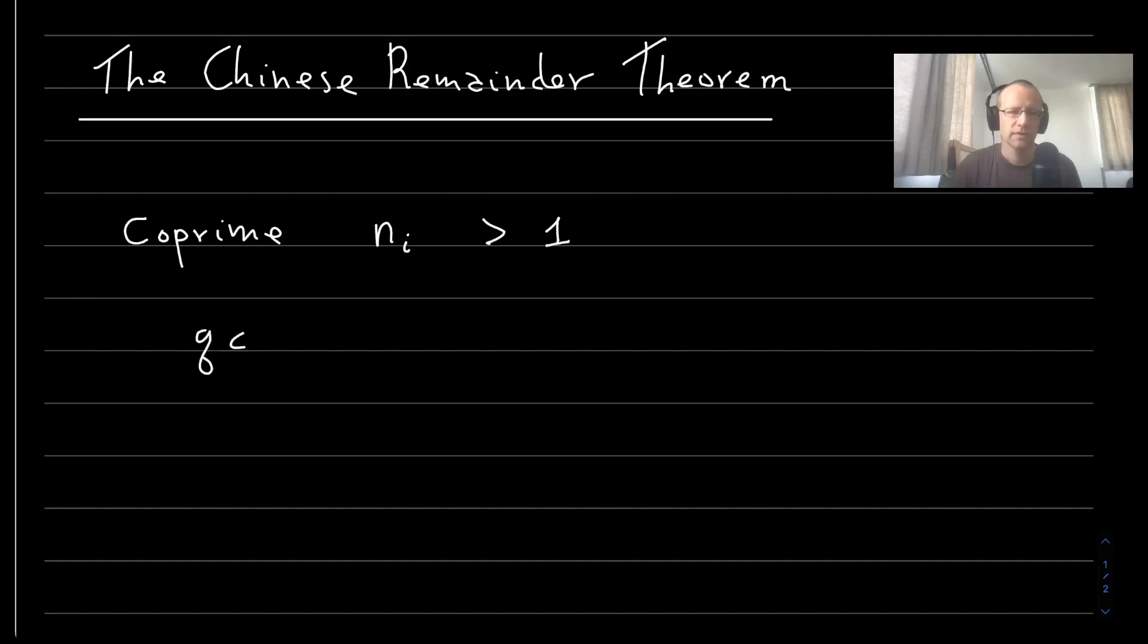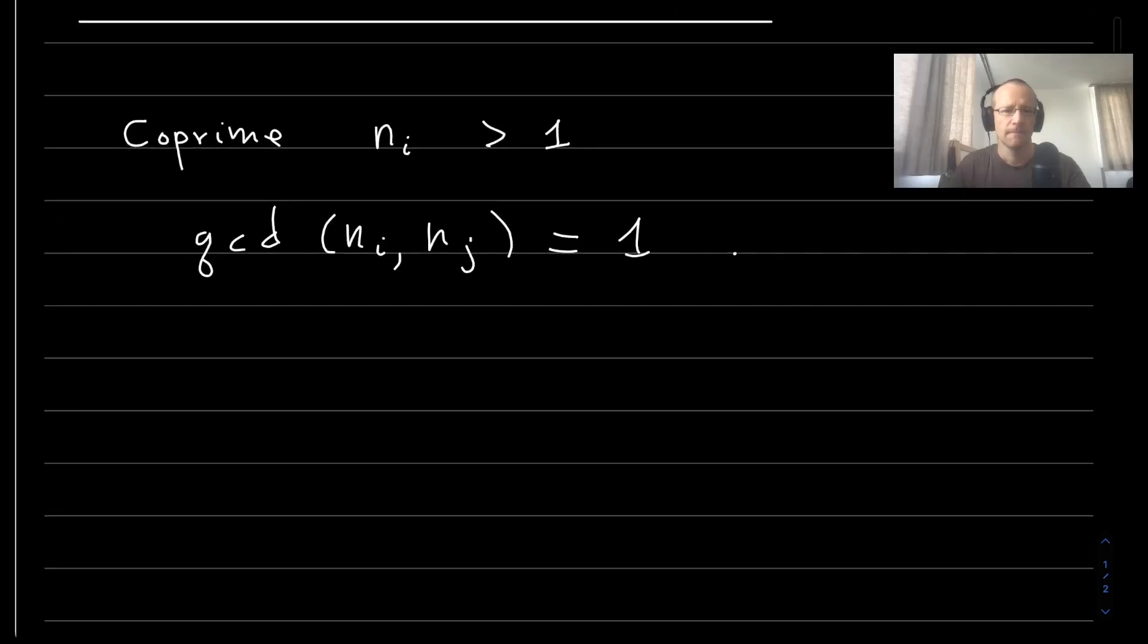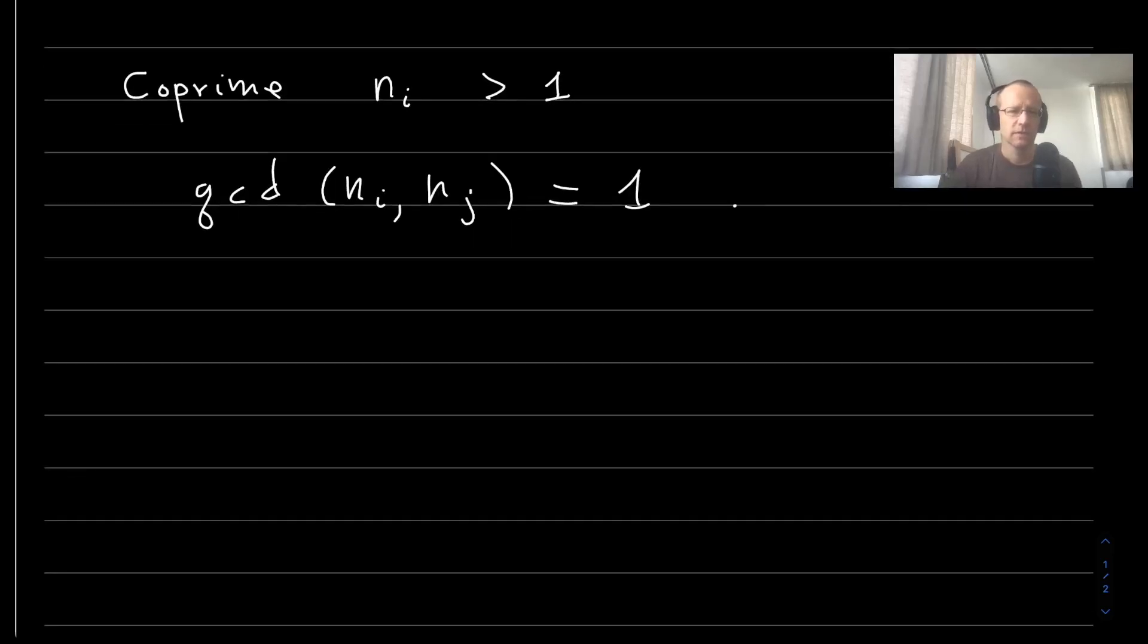So their greatest common divisors are one, since they are coprime. Then let's define their product, and call it big N.